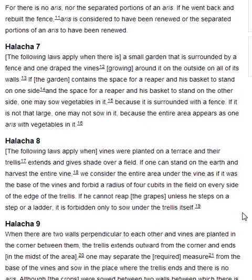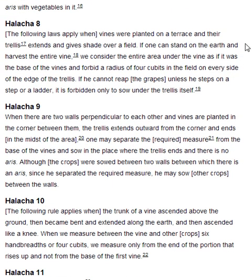Halakha 8. The following laws apply when vines were planted on a terrace and their trellis extends and gives shade over a field. If one can stand on the earth and harvest the entire vine, we consider the entire area under the vine as if it was the base of the vines and forbid a radius of four cubits in the field on every side of the edge of the trellis. If he cannot reap the grapes unless he steps on a step or a ladder, it is forbidden only to sow under the trellis itself.